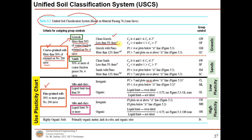Further divisions are given — for example, clean gravels have less than 5 percent fines, while gravels with fines have more than 12 percent fines. Information about the coefficient of uniformity, coefficient of curvature, and plasticity index are also used. Once we answer the questions from left to right, we arrive at a group symbol such as well-graded gravel, poorly-graded sand, or low-plasticity clay.